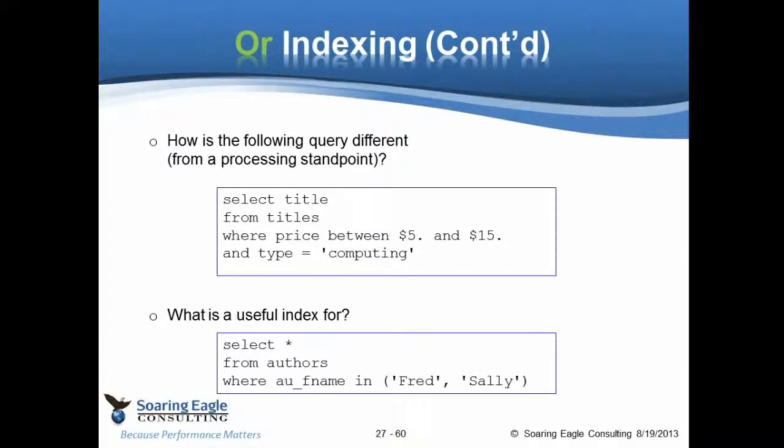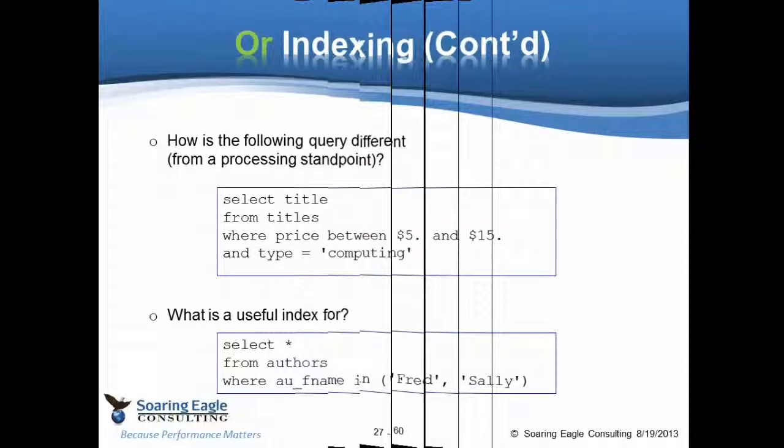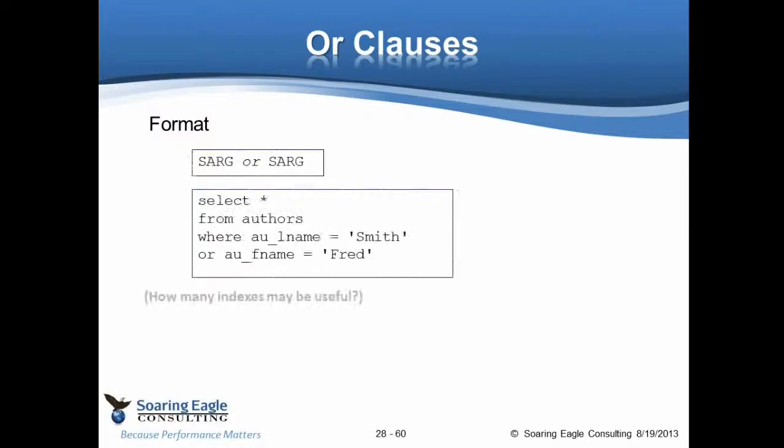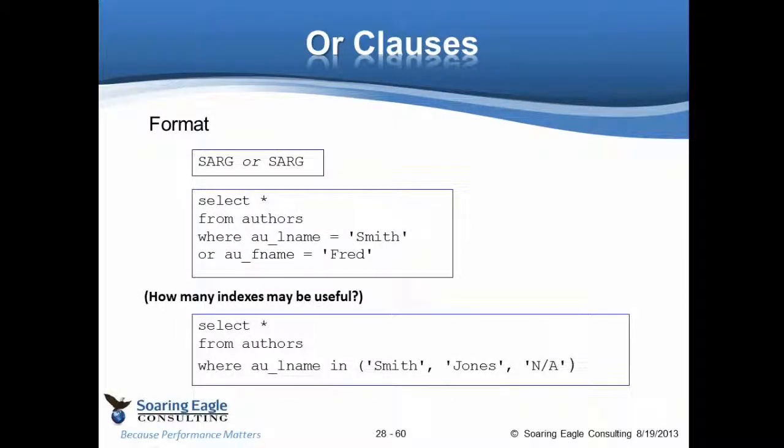We've already talked about the first example. The second example, you need to know that an IN really is broken out into an OR usually. It might be broken out into a table, but it usually gets broken out into an OR. This will be first name equals Fred or first name equals Sally. And you can actually see that as you look at the optimization. So an index on first name is going to work just fine. At the top, how many indexes are going to be useful for the first query? Two, an index on last name and an index on first name. Down at the bottom, select from authors where the last name is in the list. Once again, the IN becomes an OR.